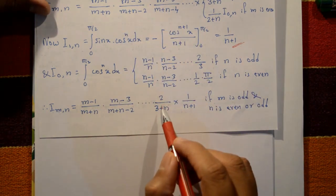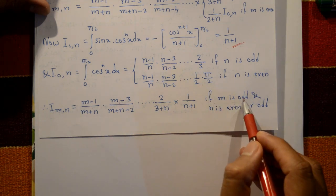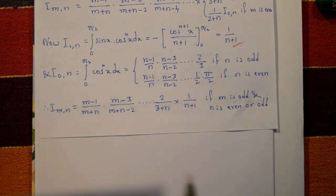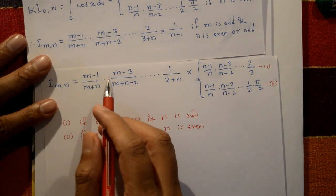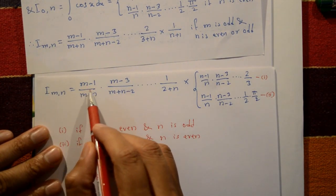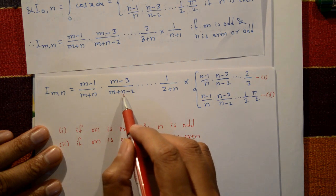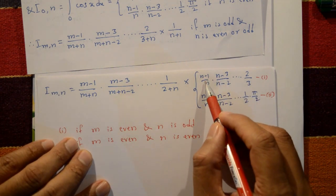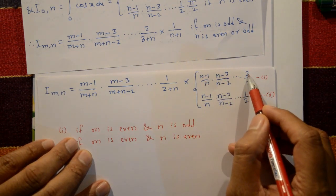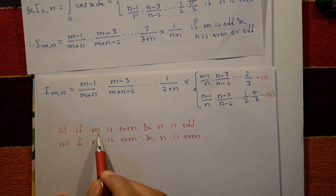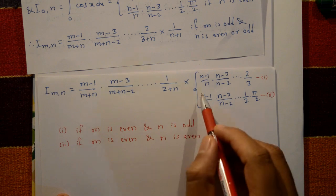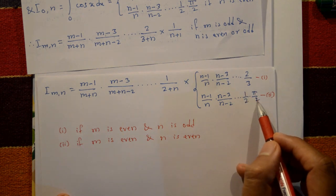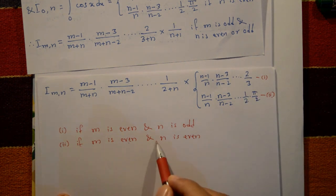Therefore, the final results are: if m is odd (and n is even or odd), I_mn = [(m−1)/(m+n)] · [(m−3)/(m+n−2)] · ... · [1/(n+1)]; and if m is even and n is odd, I_mn = [(n−1)/n] · [(n−3)/(n−2)] · ... · [1/2] · (π/2).